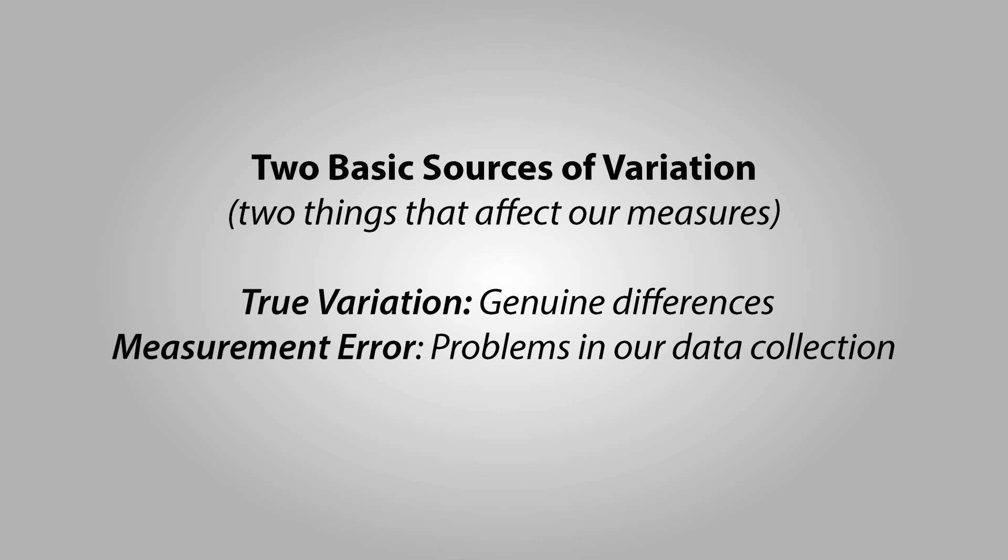Those two sources of variation are true variation and measurement error. True variation means that a measure is capturing people as they really are, and they're giving different scores because they're actually different. Measurement error occurs because there's a problem in the question. It's not completely capturing the characteristics or the information that you're trying to get from your subjects.